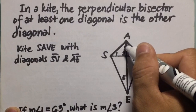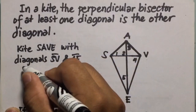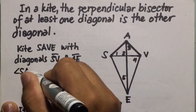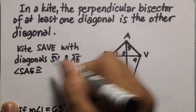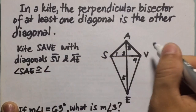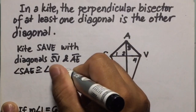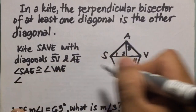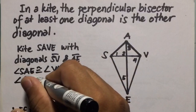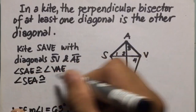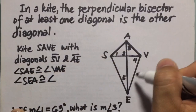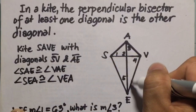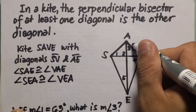These two here are congruent. So this means that measure of angle SAE is congruent to angle VAE. And another one, angle SAE is congruent to angle VEA. So these two here are congruent, and these two here are also congruent.